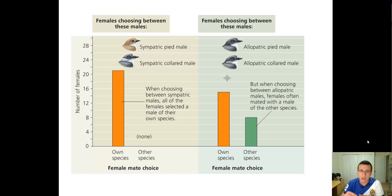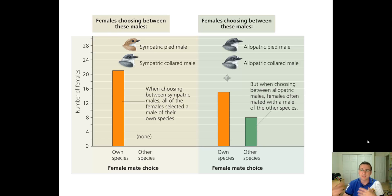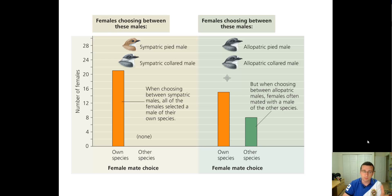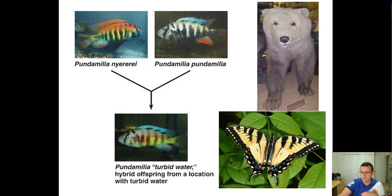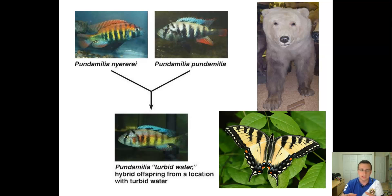Notice that in the allopatric population, when they did not compete for the same niche and therefore both look the same, when you get females from one side of the mountains and the other side and put them in the same environment, the females are not as good at identifying the different species because they look the same. The sympatric population on the left is an example of reinforcement where the species are being separated because they look different and because mate choice is reinforcing the two different species. That's an example of reinforcement.